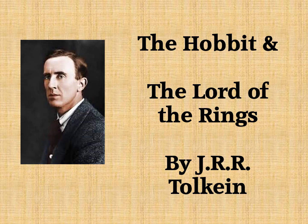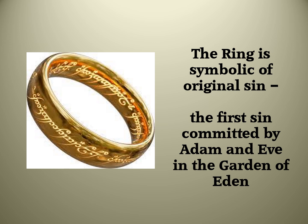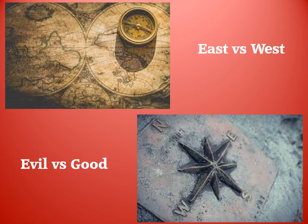The Hobbit and The Lord of the Rings by J.R.R. Tolkien don't have direct references to the Bible, God, or Jesus, but nevertheless are infused with biblical themes. The ring is symbolic of original sin, the first sin committed by Adam and Eve in the Garden of Eden. The east and west geography in the book represents areas ruled by evil creatures in the east and goodness found in the west.